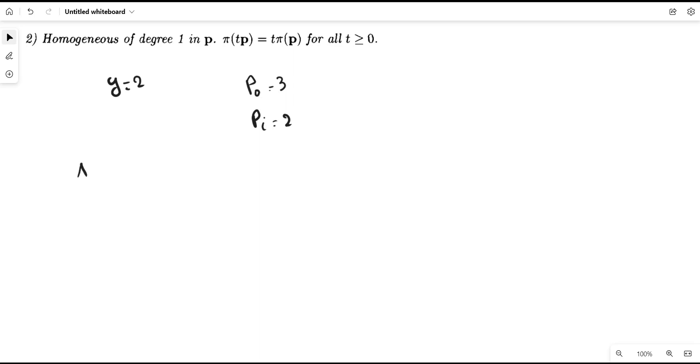By definition, profit is equal to total revenue minus total cost. And total revenue is equal to price of output times quantity.